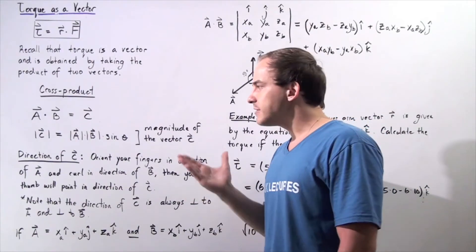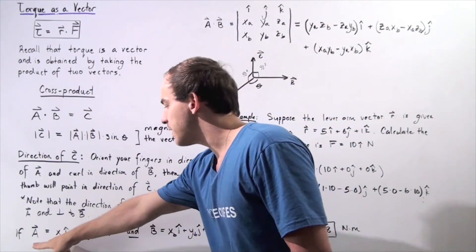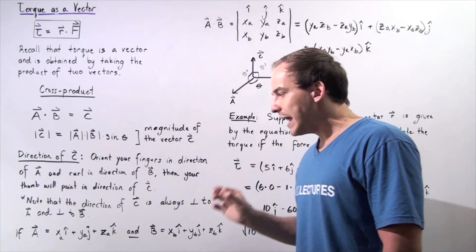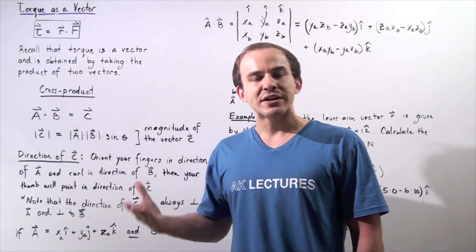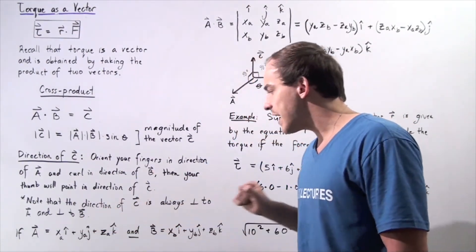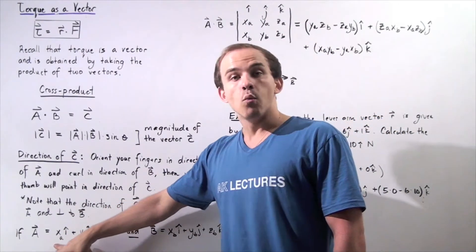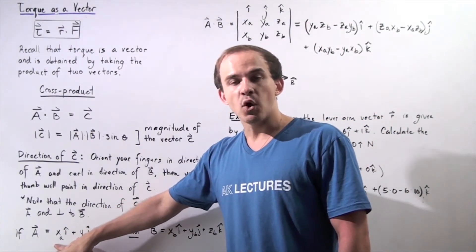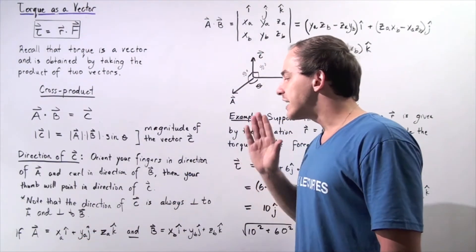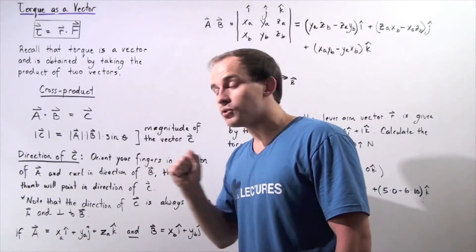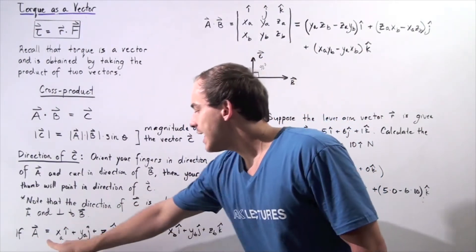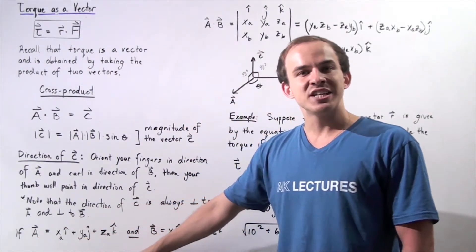Suppose we have two three-dimensional vectors A and B. Each one of these vectors has an X component, a Y component, as well as a Z component. If we want to find the cross product of vector A and vector B in component notation, we have to use a specific method.